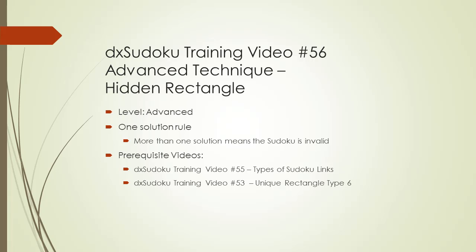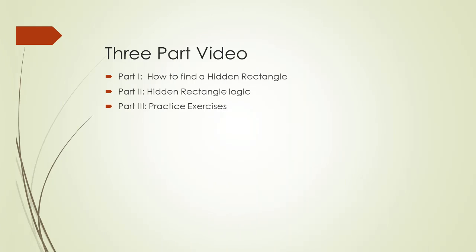This video has two prerequisite videos. First, you should watch DX Sudoku training video number 55, titled Types of Sudoku Links. And second, you should watch DX Sudoku training video number 53, titled Unique Rectangle Type 6, before you start watching this video. This video is composed of three parts. The first part shows you how to find a hidden rectangle in a Sudoku puzzle. The second part shows you how the logic of a hidden rectangle works. And the third part is a set of practice exercises so you can become a master at using hidden rectangles.